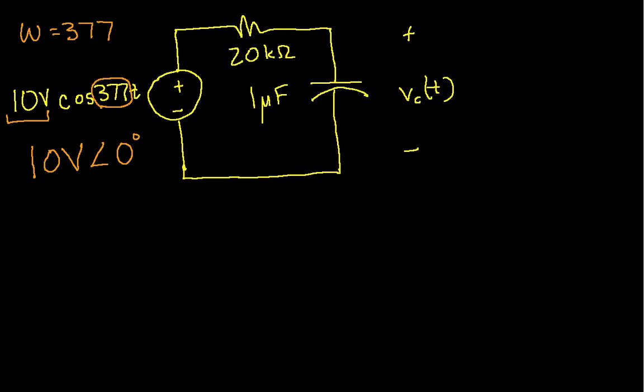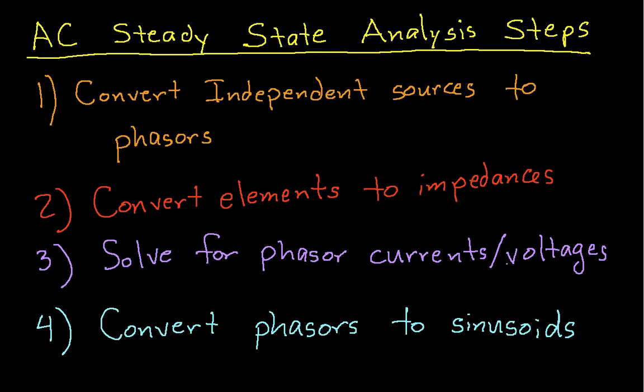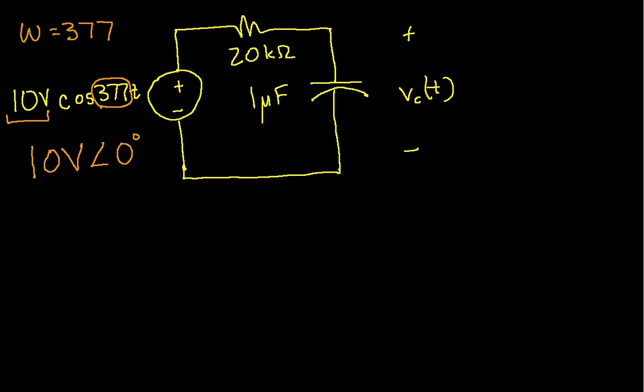So let's go back to our steps. So we'll mark this one as done. We've converted the independent sources to phasors. The next thing we want to do is convert the elements in the circuit to impedances. So I go back to my circuit. I have this element, this resistor. And so we typically denote impedances with a Z. So I'll call this impedance ZR. And again, the impedance of a resistor is just the resistance. That was easy.